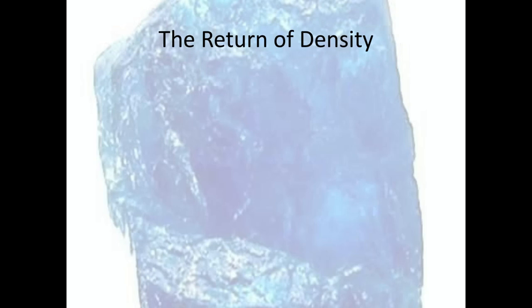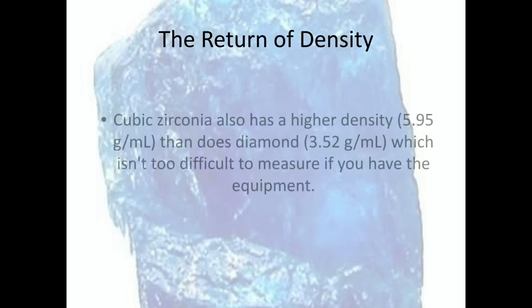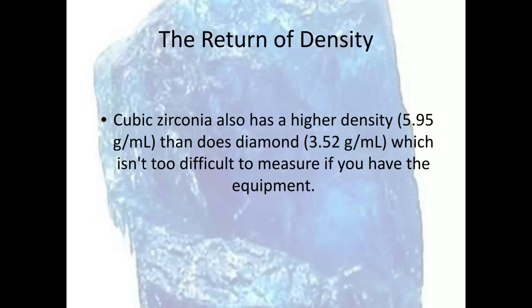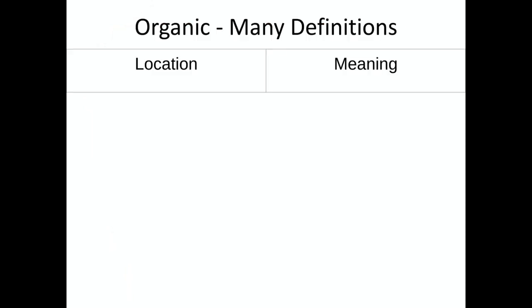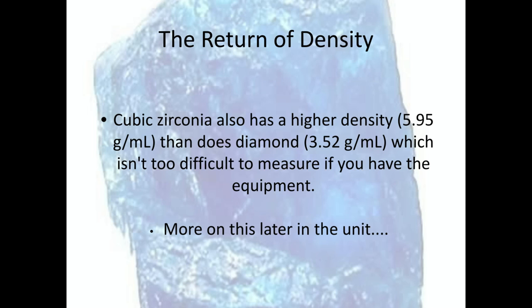Later in the unit we're going to look at different properties of minerals, one of which is called specific gravity — which in sixth grade is equivalent to density. Cubic zirconia, even though it's chemically and structurally the same as a naturally occurring diamond, actually has a higher density — around 5.95 grams per milliliter — while diamonds have about 3.5. So with the right equipment, like what we use in sixth grade, you can figure out whether you've got a diamond or cubic zirconia. More on that later in the unit.